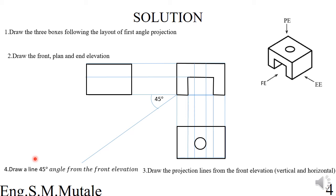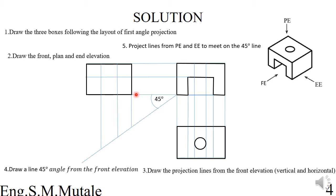Step five is to project lines from the plan elevation and end elevation to meet at the 45-degree line. From the plan elevation, you project horizontal lines to meet the 45-degree line. From the end elevation, you project vertical lines. Lines from circular features also need to be projected in this way.